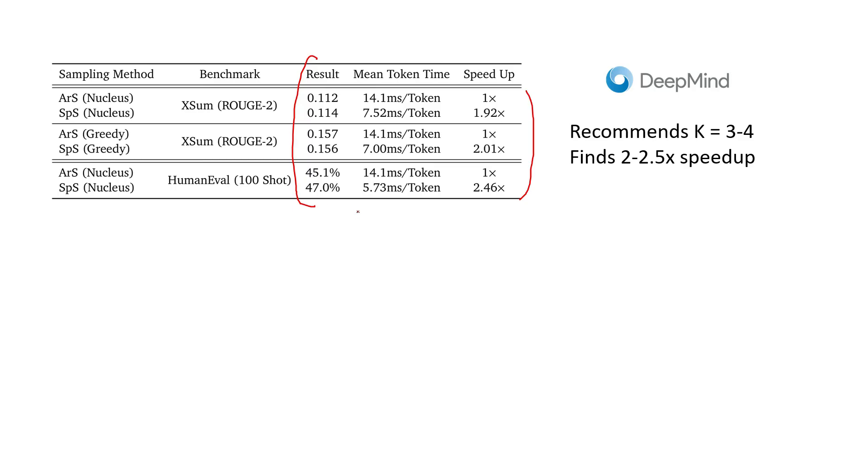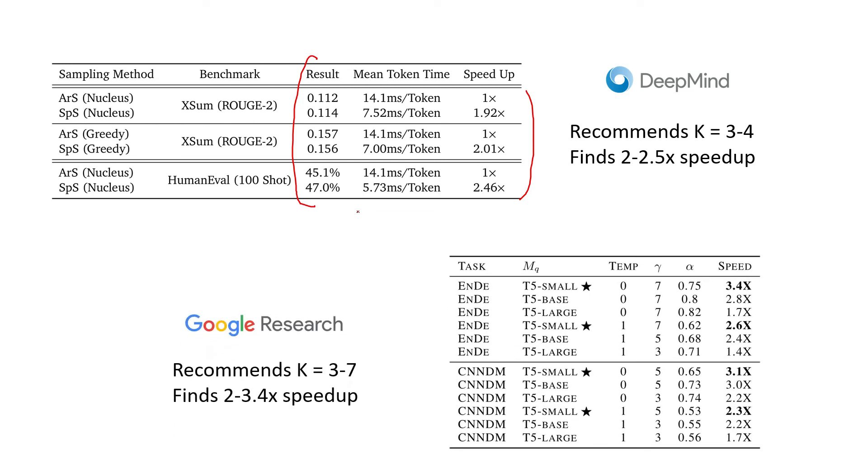The Google paper ran a slightly different set of experiments and they recommend setting K between 3 to 7, and they find a speedup of between 2 to 3.4 times compared to autoregressive sampling. So the results are very similar between these two papers.